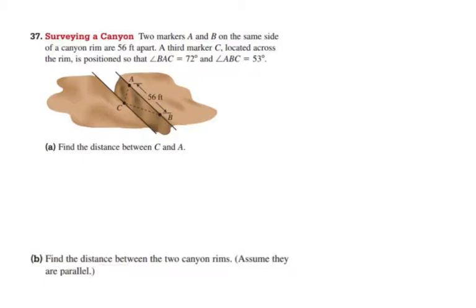Alright, so moving on to our last few problems. Of course, they are images involved, applications. So we've got two markers A and B on the same side of a canyon rim, and the canyon rim is 56 feet apart. A third marker C is located across the rim, and it's positioned so that angle BAC is 72 degrees, and angle ABC is 53 degrees. And so we need to find the distance between C and A. Alright, so that is technically side B. So in order to find side B, that means that I'm going to need to get angle C so I can set up a proportion of sine C over C.